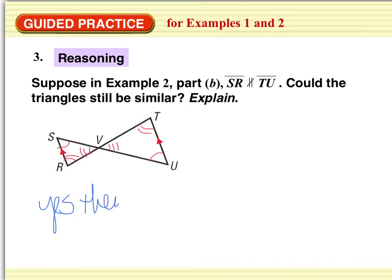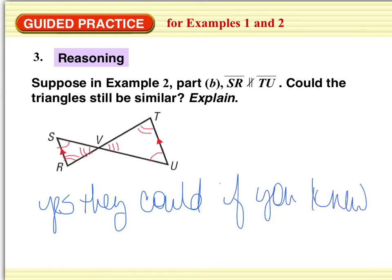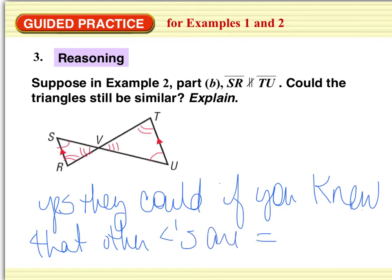Yes, they could. If you knew that, if you could prove that other angles were congruent. If you knew that other angles are congruent. We have this one by the vertical angles. So somehow you'd have to prove that other angles are congruent. With what you're given, no. But they still could be if you had other information to prove. So it's one of those answers that as long as you prove your reasoning, you can be right. But if you say a statement, yes or no, you have to give a reason why.